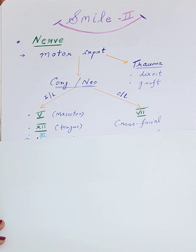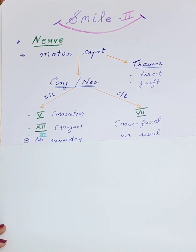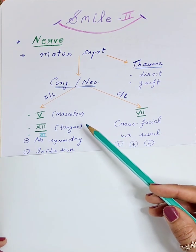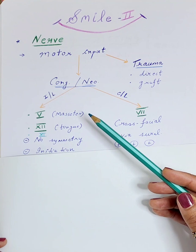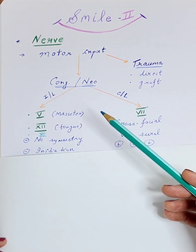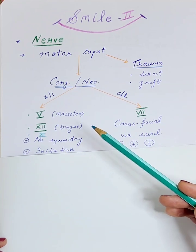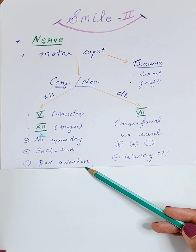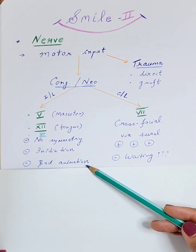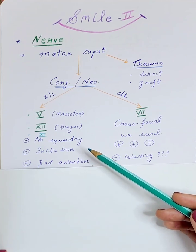There are certain drawbacks to these nerves because they are not originally the innervating nerves for the facial musculature. They do not provide symmetry — when a patient smiles, there is an awkward pull created. There is also a problem with initiation: with the nerve to the masseter, the patient has to perform chewing movements, and with the hypoglossal, tongue movement is needed to initiate the smile. This leads to bad animation — the smile does not appear natural.